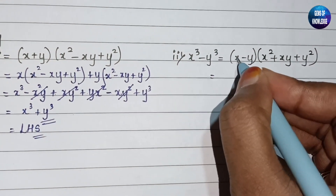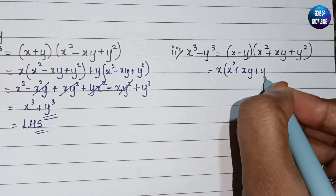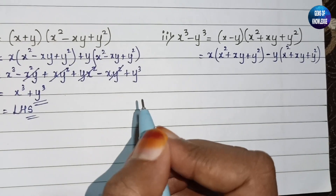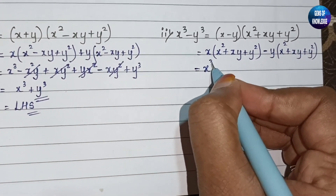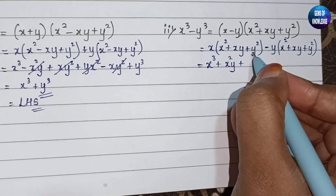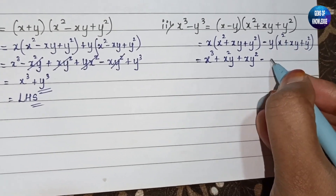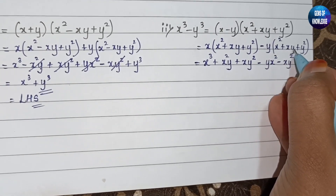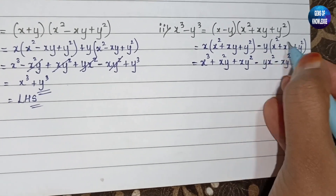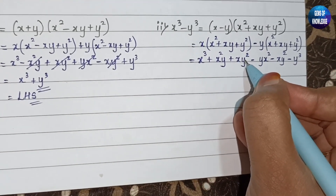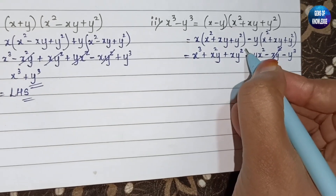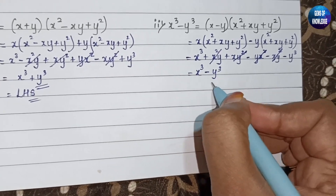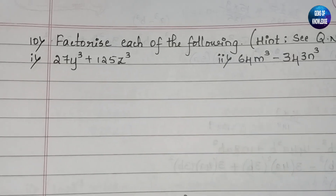For the second identity, x³ - y³ = (x-y)(x²+xy+y²): x is multiplied by x²+xy+y², minus y into the same term. Expanding: x³ + x²y + xy², then minus x²y, minus xy², minus y³. The x²y terms cancel and the xy² terms cancel, leaving x³ - y³. Moving on to question number 10.